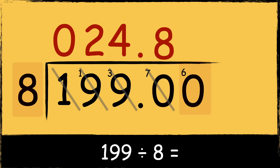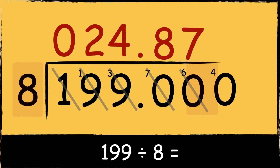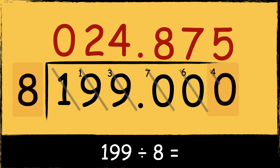Eight goes into 60 seven times with four left over. Eight goes into 40 five times with nothing left over, so the answer is 24.875.